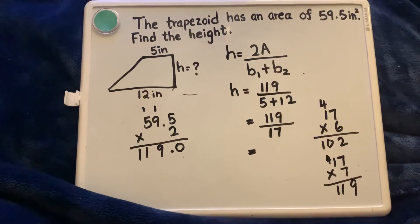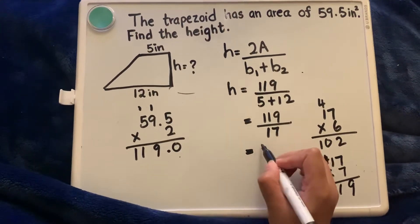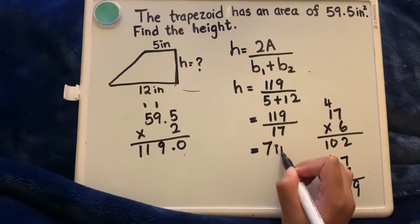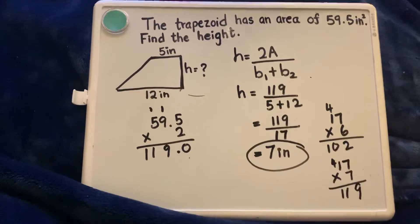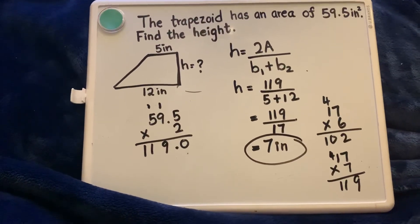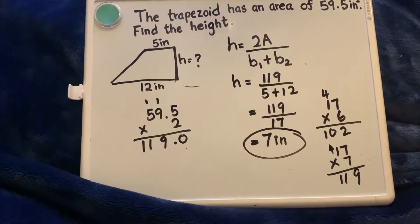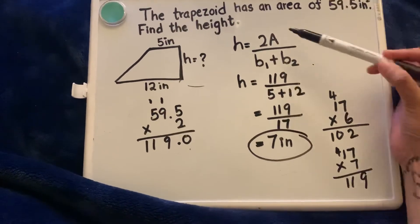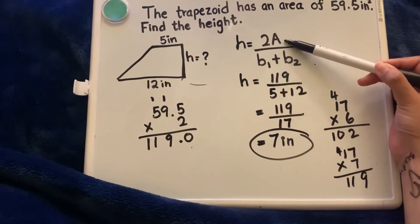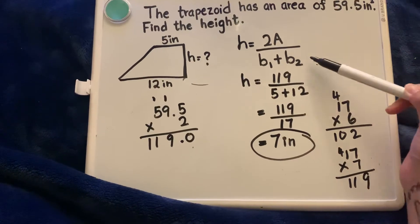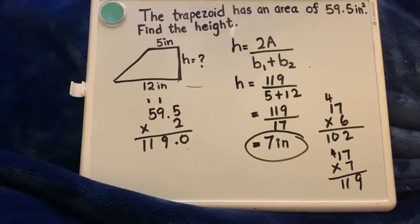So my answer is 7 inches. That's how you find the height of a trapezoid. All you have to do is multiply the area by 2 and divide by the sum of base 1 and base 2.